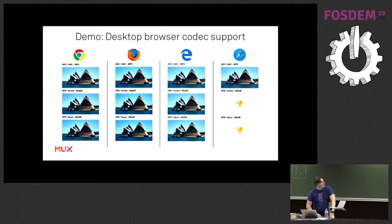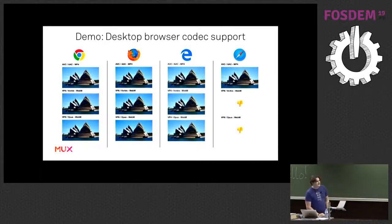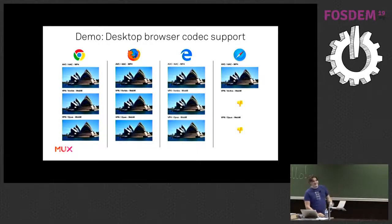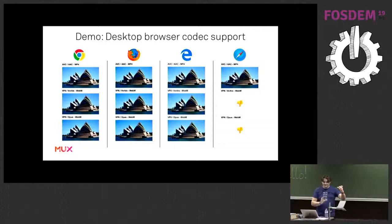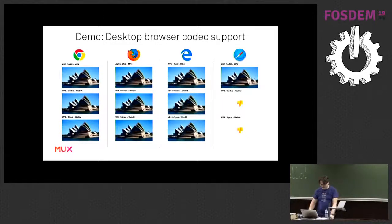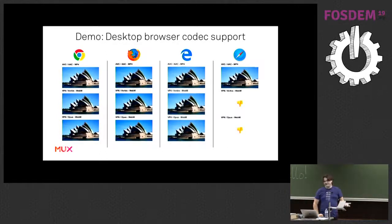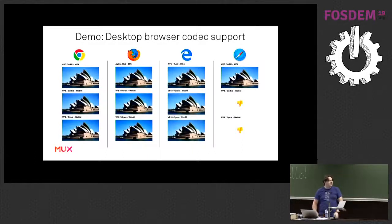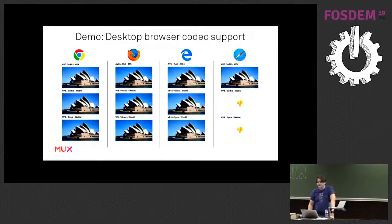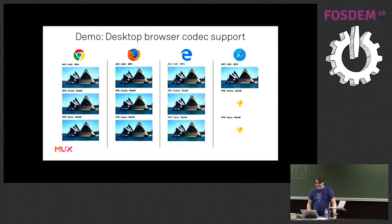Here's what it looks like - there are little animated videos in there, and this is real data. I actually went and captured the video capture from each of these and trimmed it. We can actually see, as we'd kind of expect, AAC and AVC plays absolutely everywhere - absolutely fine, no problem whatsoever. VP8, VP9 - we're good on Chrome, we're good on Firefox, we're good on Edge, but Safari starts to let us down a bit.